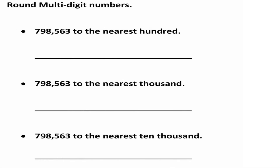We're going to round multi-digit numbers. We're going to round 798,563 to the nearest hundred. First, we need to identify which digit is in the hundreds place — we have the ones, the tens, and the hundreds. Let's circle the number that's in the hundreds place.